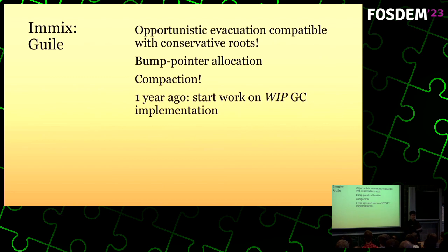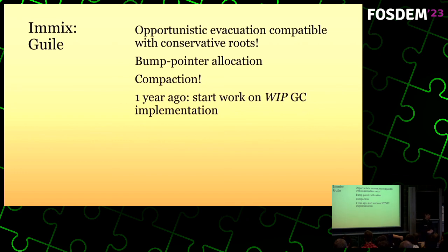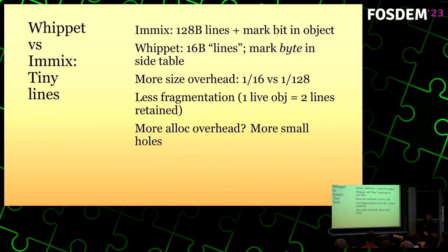When I realized you can mark in place or evacuate, this is something that is compatible with Guile. We can do bump pointer allocation instead of allocating from free lists, which would improve throughput in Guile programs. We can compact the heap. I started a year on this work-in-progress WIP-GC implementation — hence where the name Whippet comes from. There are a couple of differences from IMIX.